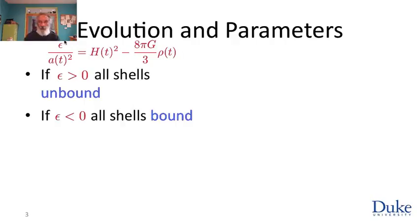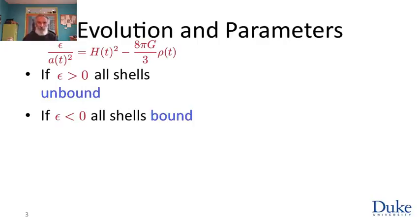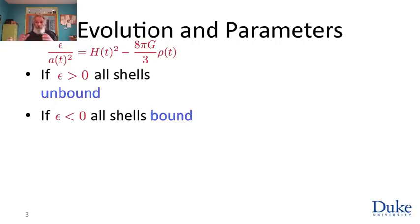Remembering that ε′ will now be called ε, I have this constant of the motion: ε divided by a² equals H² minus (8πG/3)ρ. The sign of ε is the same as the sign of E. If ε is positive, then the energy is positive for every shell — all shells are unbound, so they'll continue moving out to infinity; the expansion will continue forever. If ε is negative for one shell it is negative for all shells, all shells are bound, the expansion will stop, and gravity will pull everything back in.